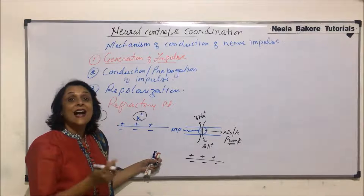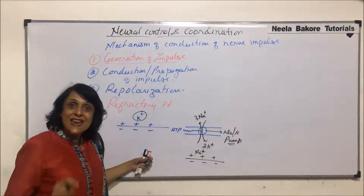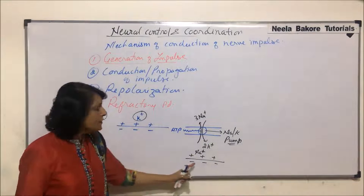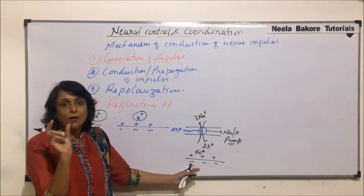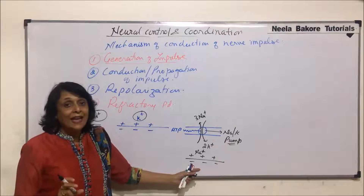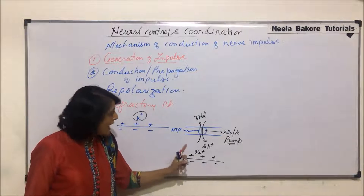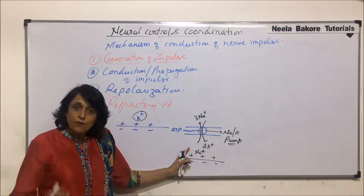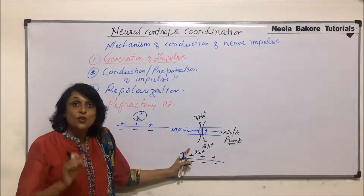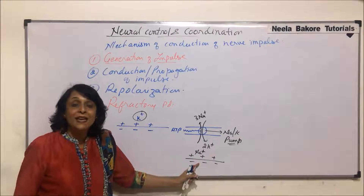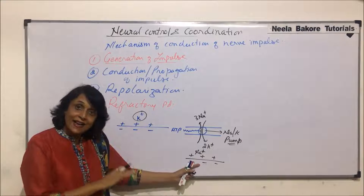Now it is again electropositive because of sodium ions. Now if we give a stimulus to this, the permeability will change and the channels which are going to open are sodium channels. Sodium is available outside for moving in, so the membrane can be stimulated again. The nerve fiber can be stimulated again.